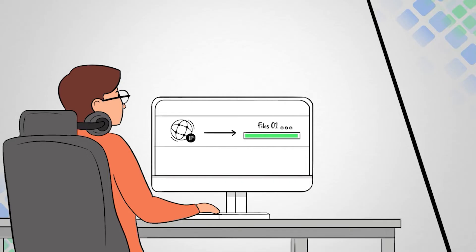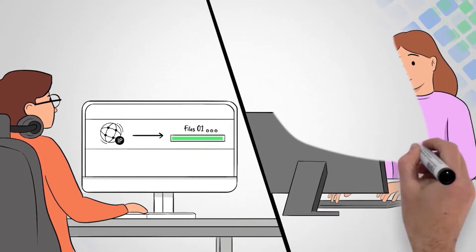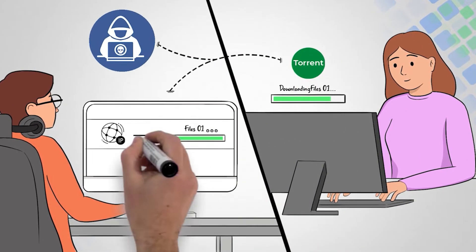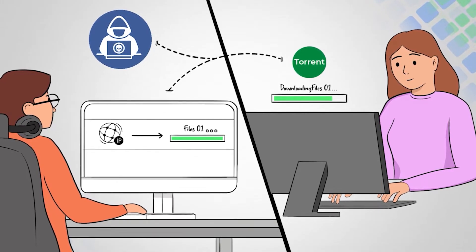Worse, because torrents use file sharing, your home IP activity is exposed. Anyone, from curious neighbors to your work colleague Jim, can see what you're torrenting.